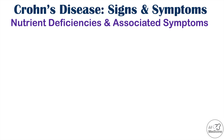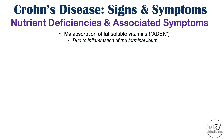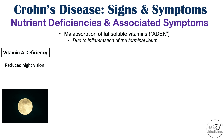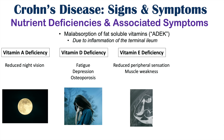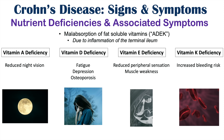Crohn's disease is associated with malabsorption of fat-soluble vitamins: A, D, E, and K. The reason is that inflammation frequently occurs in the terminal ileum, which is where fat-soluble vitamins are absorbed. Vitamin A deficiency can cause reduced night vision. Vitamin D deficiency can lead to fatigue, depression, and later risk of osteoporosis. Vitamin E deficiency can lead to reduced peripheral sensation and muscle weakness. Vitamin K deficiency can lead to an increased bleeding risk.